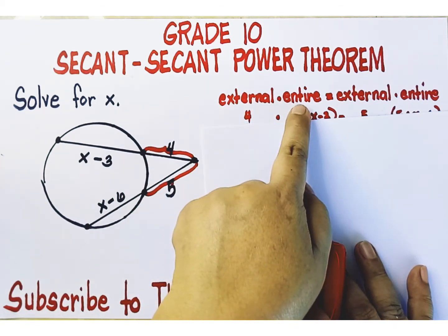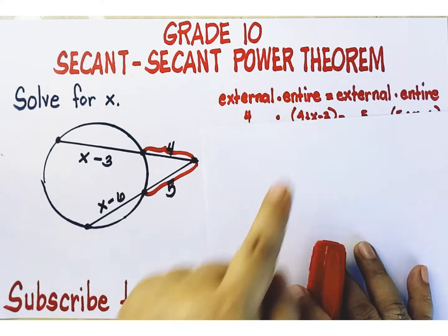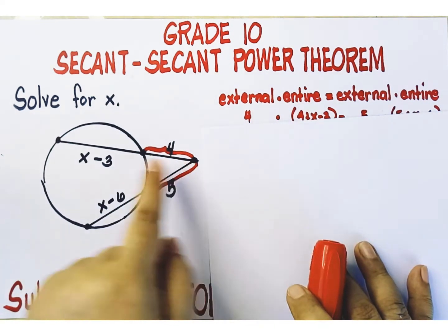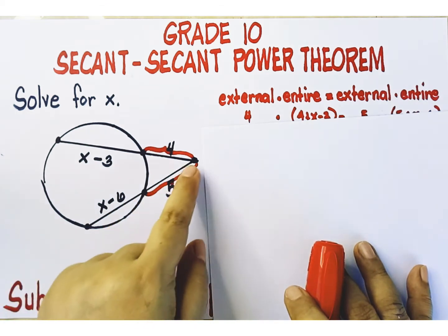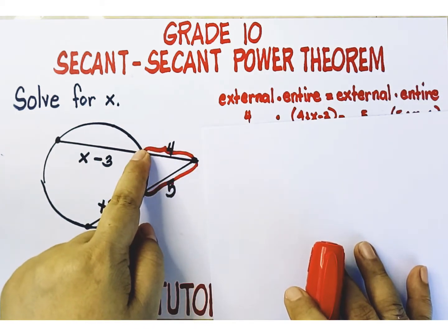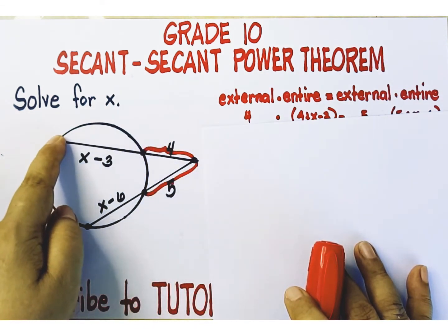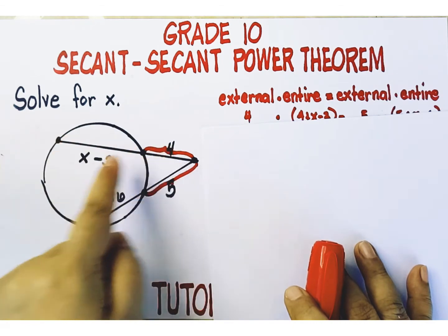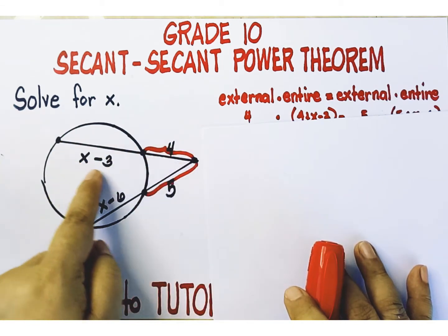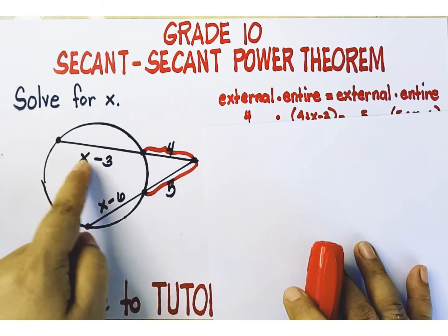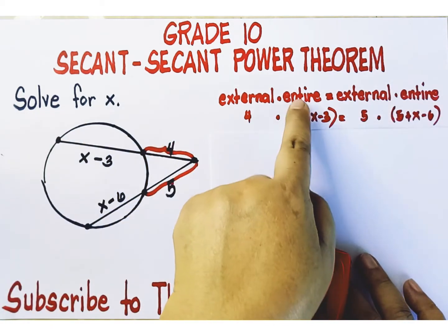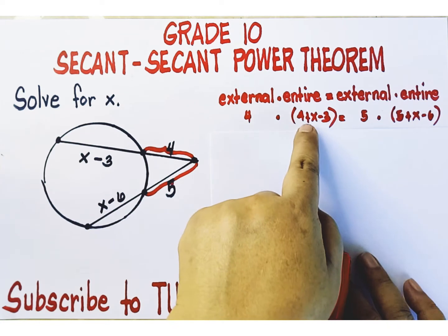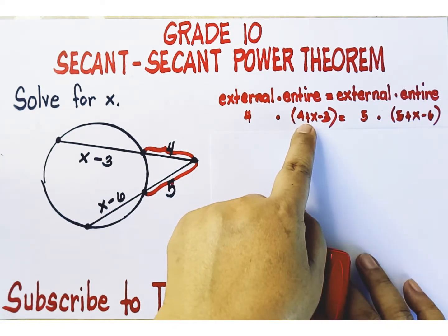Multiplied by the entire secant segment. The entire secant segment is the sum of the external portion and the internal portion. So adding up four and the expression x minus three will equal the whole secant segment. We replace this word with the expression four plus x minus three.